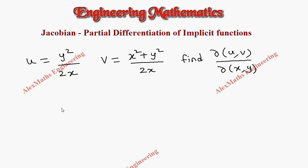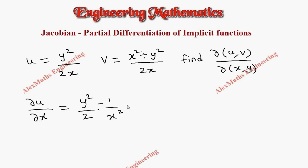Let's find the partial differentiation of u with respect to x, meaning y is constant. So y² / 2 remains as it is, and the differentiation of 1/x gives minus 1/x². Therefore this term is minus y² / 2x². Then we find partial differentiation of u with respect to y.